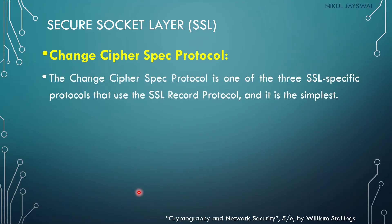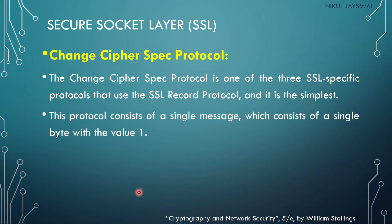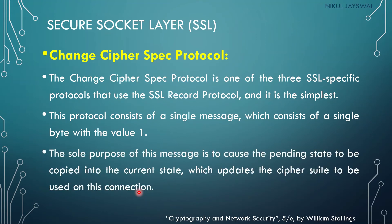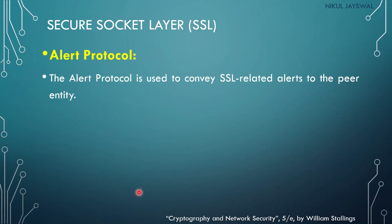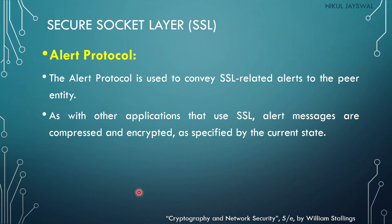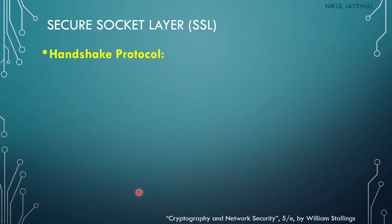Next is the Change Cipher Specification Protocol, one of the three SSL-specific protocols. It is the simplest — this protocol contains a single message consisting of a single byte with value one. Its purpose is to cause the pending state to be copied into the current state, updating the cipher suite used on the connection. The Alert Protocol is used to convey SSL-related alerts to the peer entity. Alert messages are compressed and encrypted as specified by the current state.